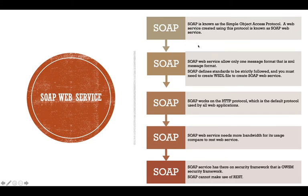SOAP web service allows only one message format, which is XML message format. If we are getting a request in another message format, we first need to convert it to XML format before we can process that message. SOAP web service defines standards that should be strictly followed. That's why we create WSDL files and follow all the standards whenever we want to create any SOAP web service. SOAP web service works on HTTP protocol, which is the default protocol used by all web applications.